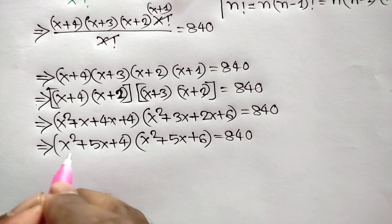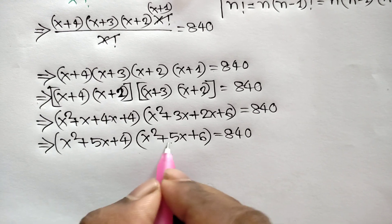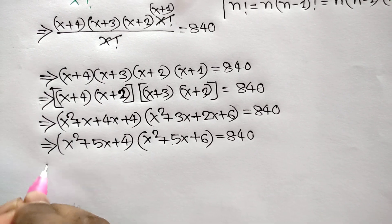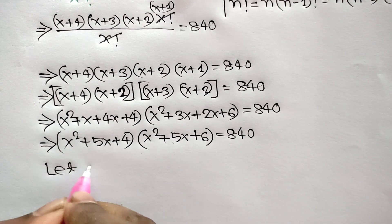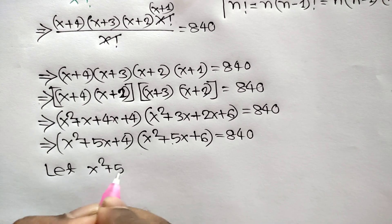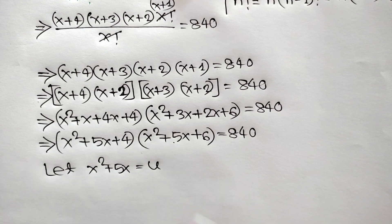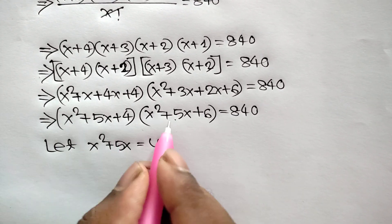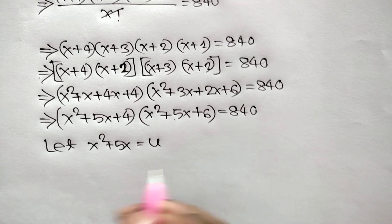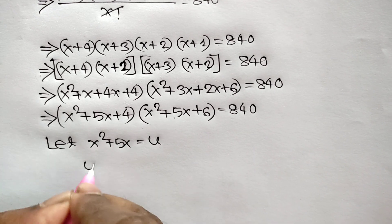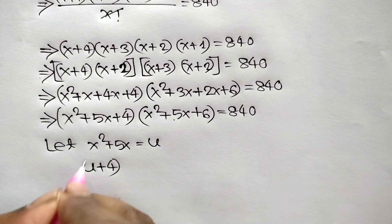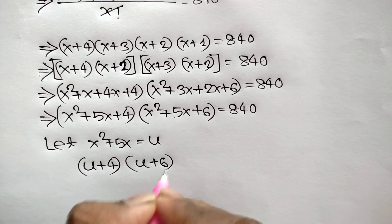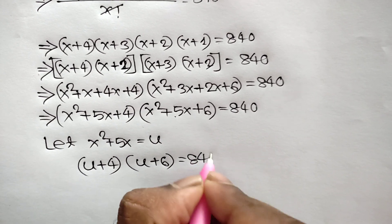Now notice that x²+5x is common in both factors. So let u equal x²+5x. Our equation becomes (u+4) times (u+6) is equal to 840.